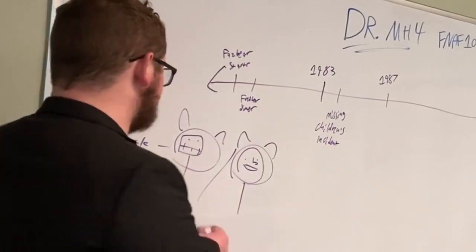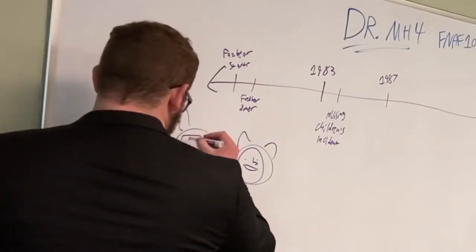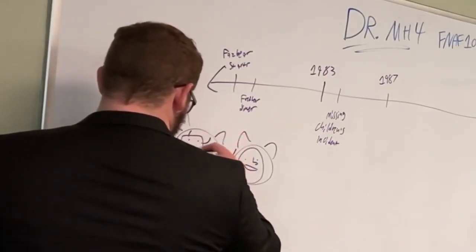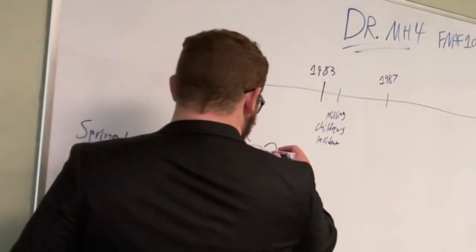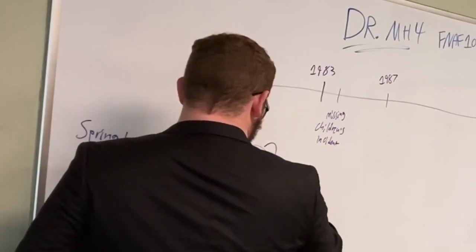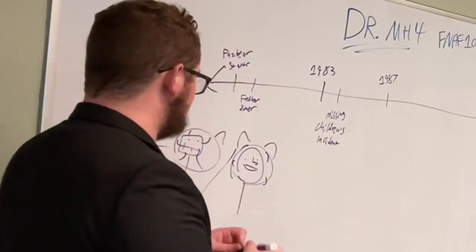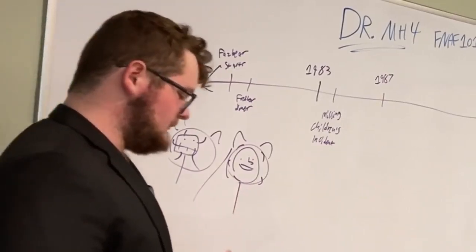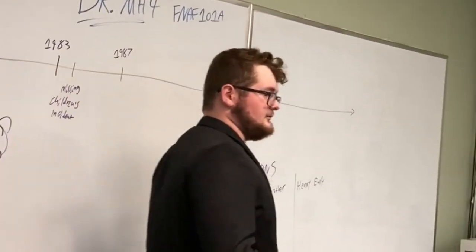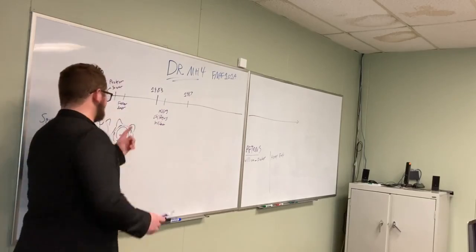But the Spring Locks pull away when they are not in use so they can be used, so the suit can be used by a human being and roam around the show floor and interact with children and stuff. At Fredbear's Family Diner, we have, like I said, William Afton.